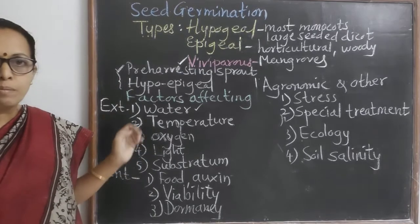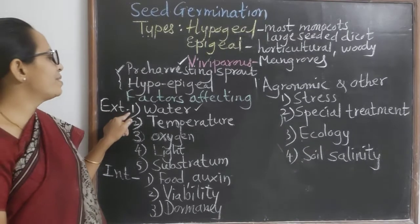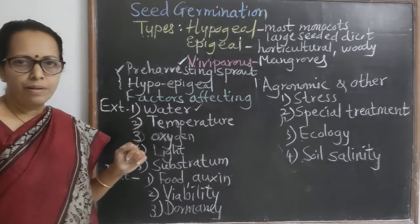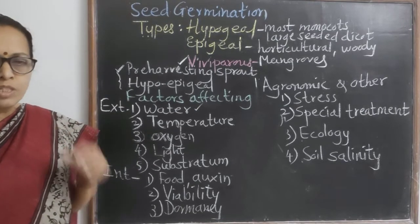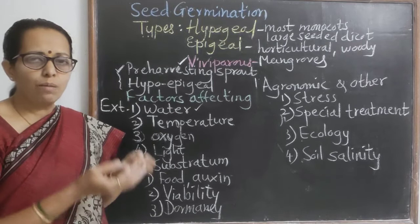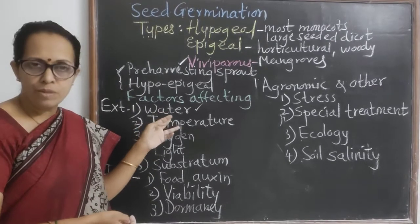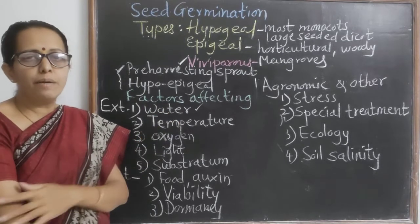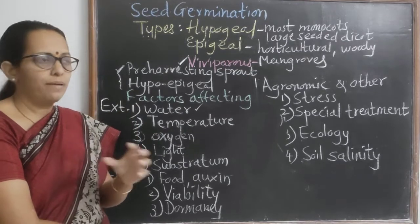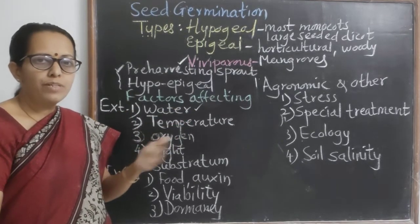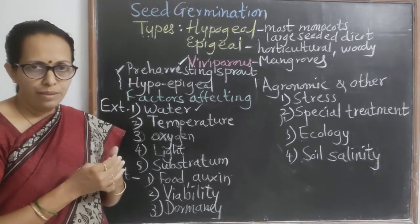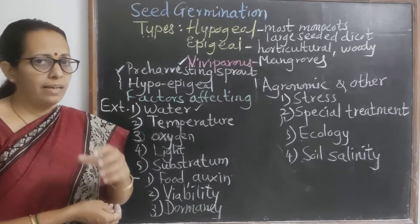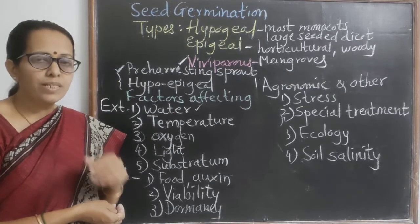The first external factor is water. Whenever any physiological process occurs, water is a must — without water, cells will not remain active. First of all, the seeds must be imbibed in water so they become active and physiological processes get started, because germination occurs at the cost of reserved food present in the seed.